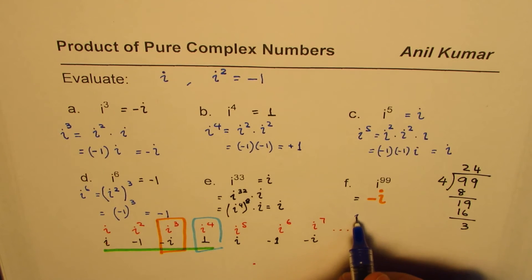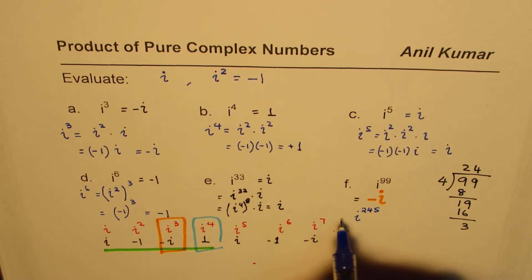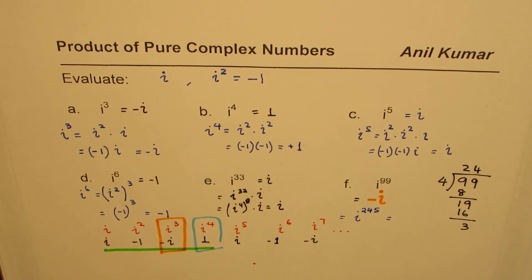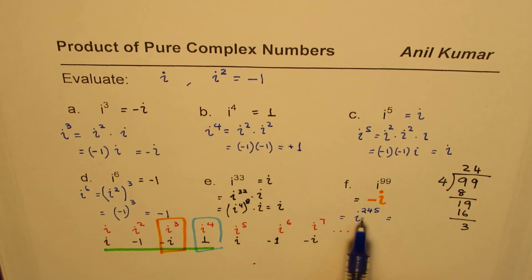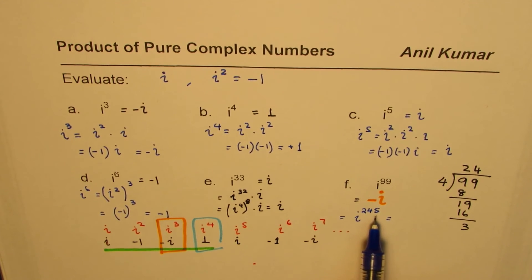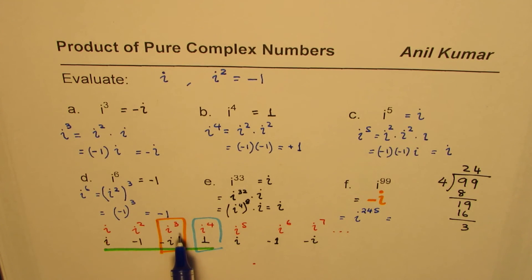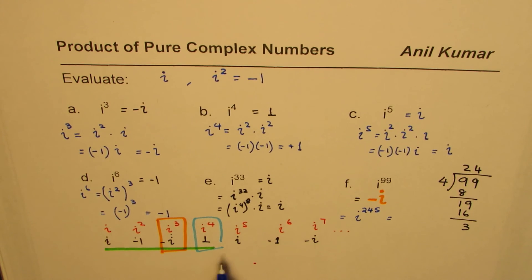So that's the general method for any power of i. For example, i to the power of 245: divide 245 by 4 to get the remainder, which will be 0, 1, 2, or 3, and then read off the corresponding value from the pattern. I hope this video helps you understand and apply the pattern to evaluate powers of this pure imaginary number. I'm Anil Kumar — please share and subscribe. Thank you and all the best.